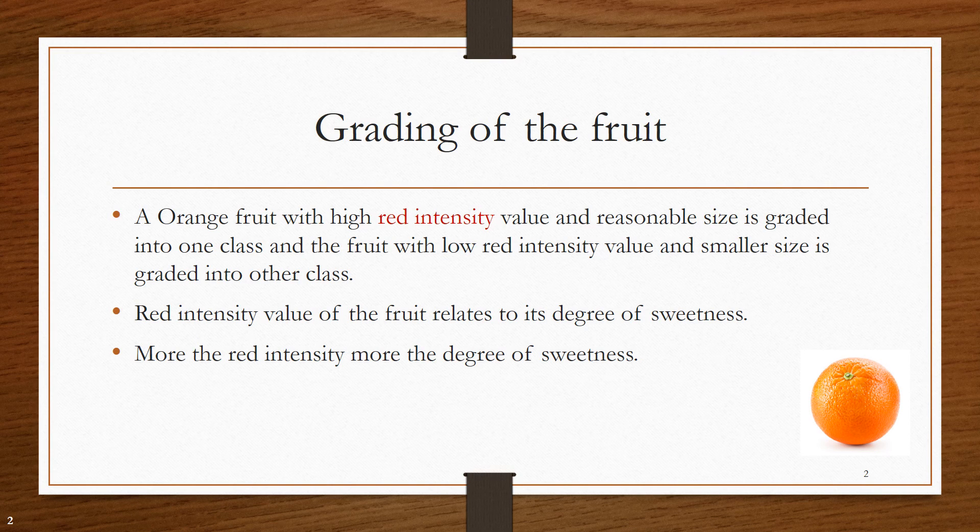Now, let's see how the fruit is being graded. Orange fruit with high red intensity value and reasonable size is graded into one class. On the other hand, the fruit with lower red intensity value and smaller size is graded into other class. Red intensity value of the fruit relates to its degree of sweetness.